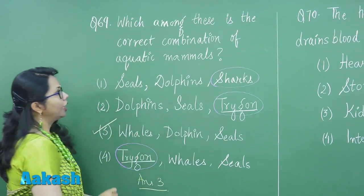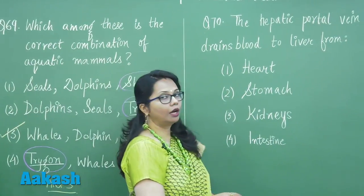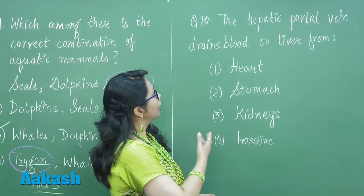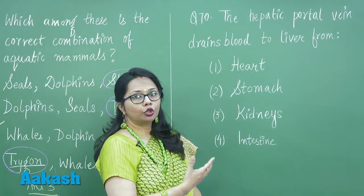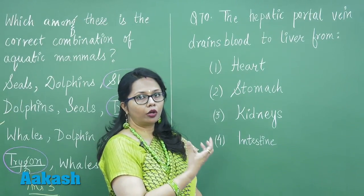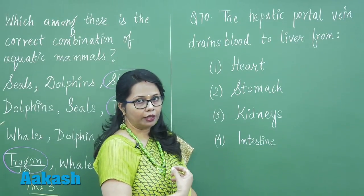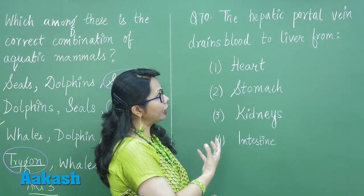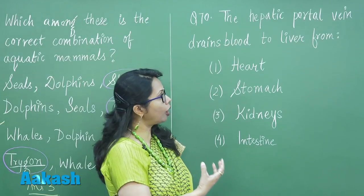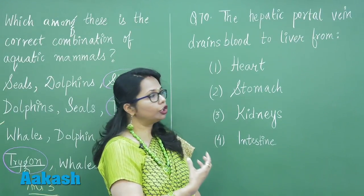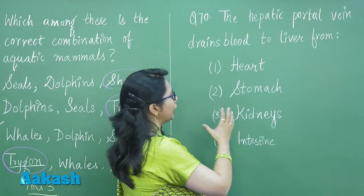Moving to question 70 about the hepatic portal vein. It is a vein that begins from an organ or organ system and carries blood to another organ. The hepatic portal vein collects blood containing nutrients absorbed after digestion and transports it to the liver, beginning from the alimentary canal.